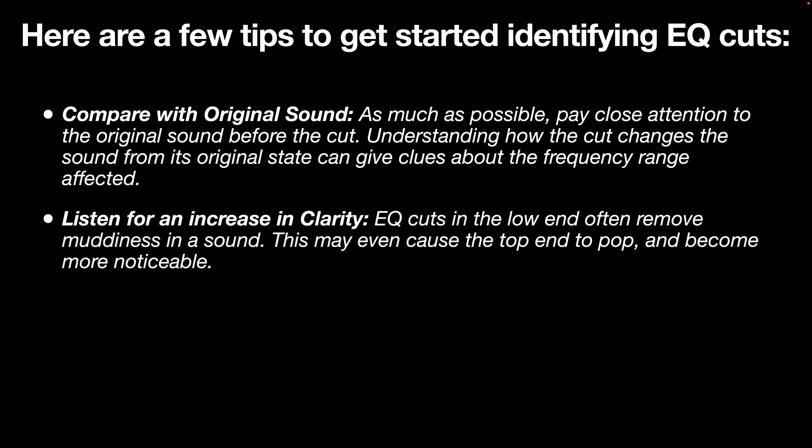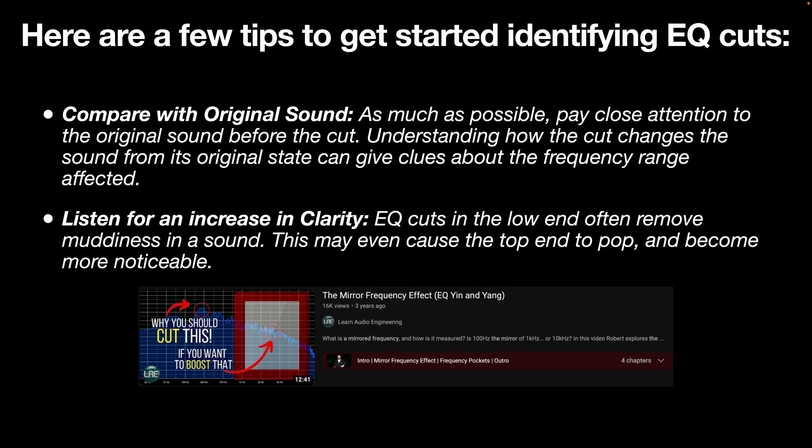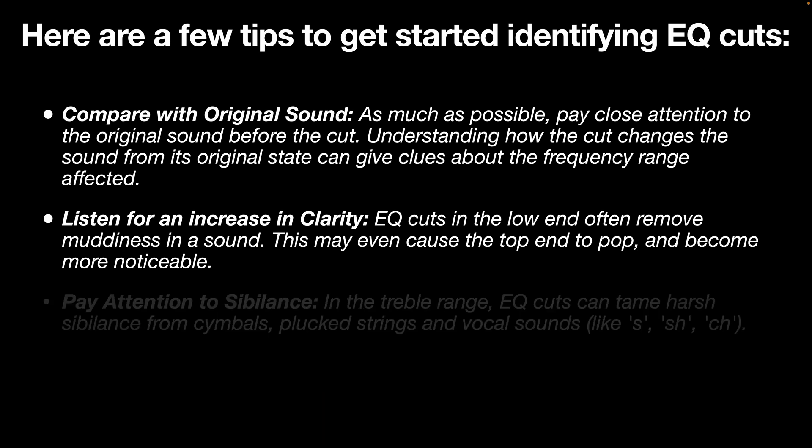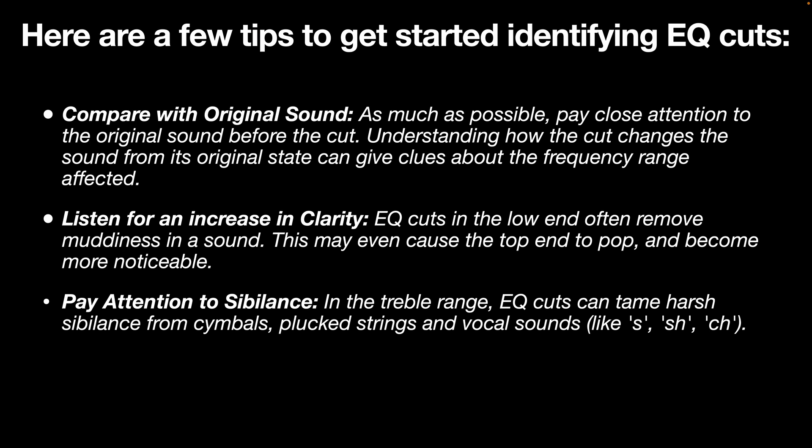EQ cuts in the low end often remove muddiness from a sound — this may even cause the top end to pop and become more noticeable. If a muddy or boomy quality disappears from the pink noise, it might indicate a cut in the low frequencies. In the treble range, EQ cuts contain harsh sibilance from cymbals, plucked strings, and vocal sounds like S, SH, and CH. If these sounds lose their sharpness, it could indicate a cut in the high frequencies. If the pink noise becomes softer, you're likely hearing an EQ cut in the upper spectrum.